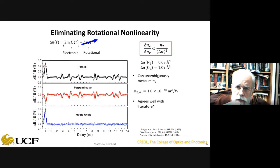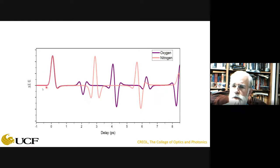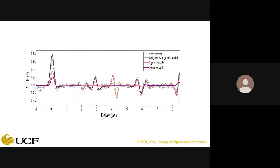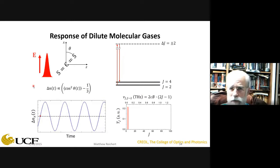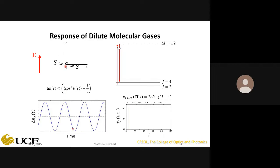Unlike CS₂ liquid where the signal decays within a picosecond, air shows recurrences — features appearing well after the excitation pulse. At the magic angle, only the ultrafast response is seen with no recurrences. These recurrences arise from quantized rotational states: the excitation pulse imparts a torque via Raman transitions (ΔJ = ±2), exciting molecules into different rotational levels that rotate at different frequencies. Separately, oxygen and nitrogen recurrences are modeled and their weighted sum matches the observed air signal.